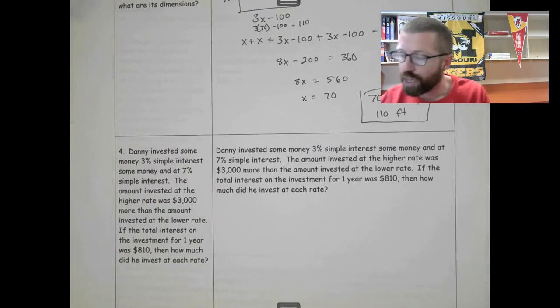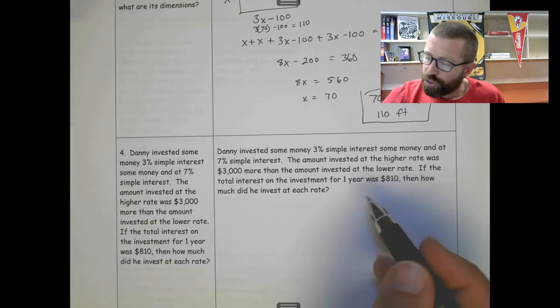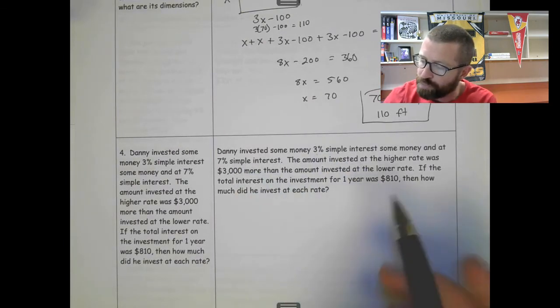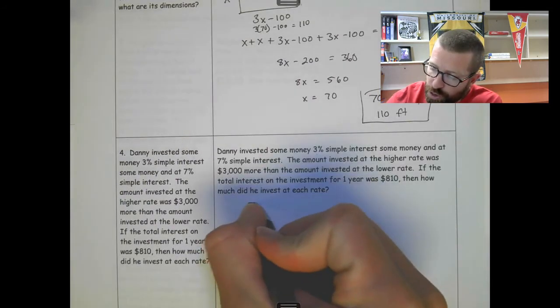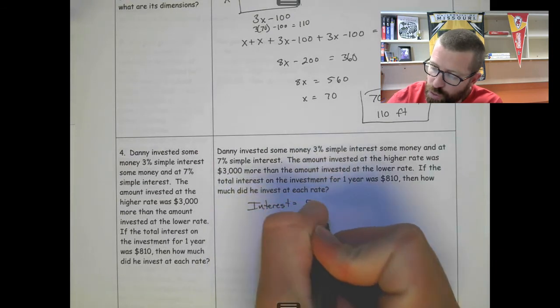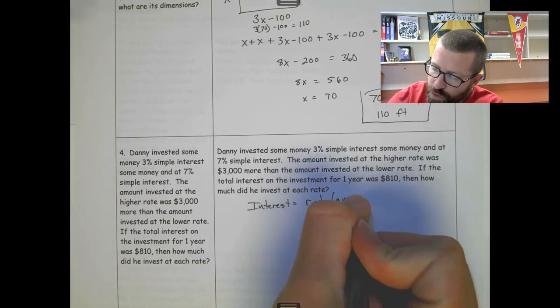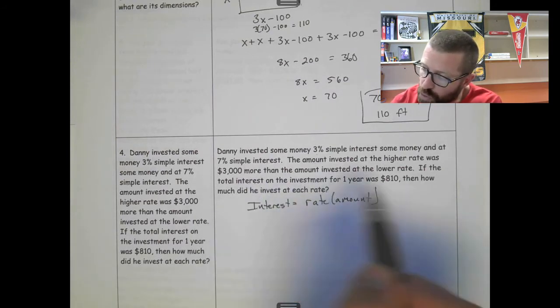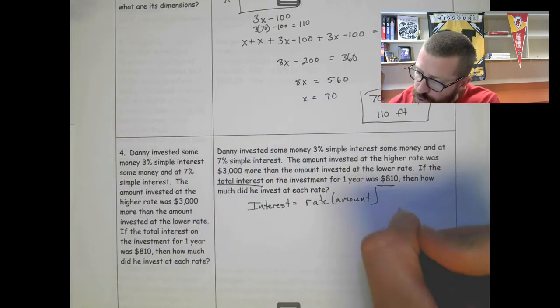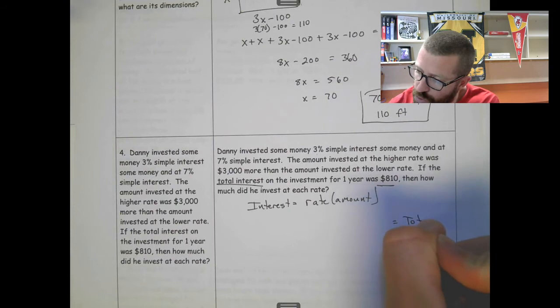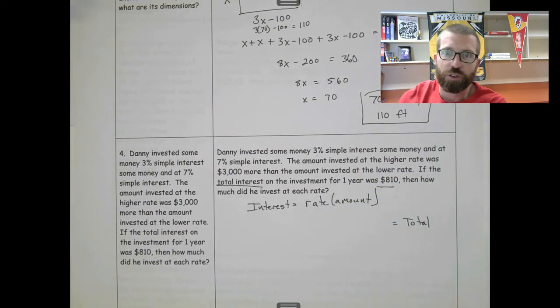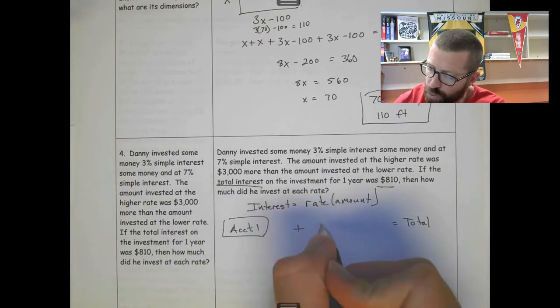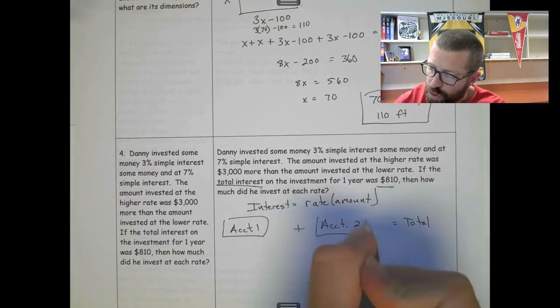Let's shift gears and look at an interest example. This one's tricky, he's got two accounts, a 3 percent account and a 7 percent account. First, with interest, we can find simple interest: interest equals rate times the amount. The setup of this problem is we have a total. The total interest is over here, so the total is made up of the interest from account one plus what you make from account two equals the total.